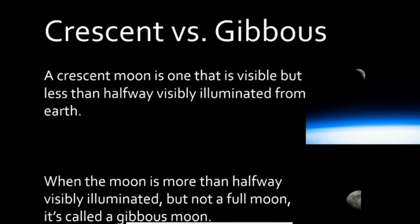The final two terms we're going to look at are crescent versus gibbous. A crescent moon is one that is visible but is less than halfway visibly illuminated from the earth, as you'll see in the picture to the right of the definition. When the moon is more than halfway visibly illuminated but not a full moon, it's called a gibbous moon, as you'll see again in the picture to the right of the definition.